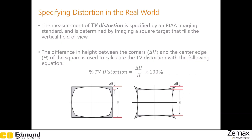The second way that distortion is specified is called TV distortion. You take the ratio of delta h and h to calculate distortion, where delta h is the difference in height between the corners and h is the center edge of the square.